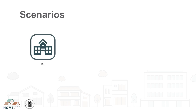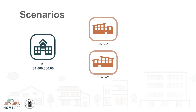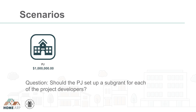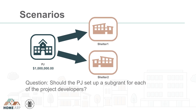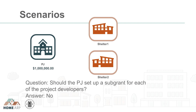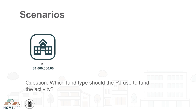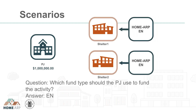In the next scenario, the PJ has budgeted $1 million for the development of non-congregate shelters. It issued an RFP and selected two projects to be developed. Should the PJ set up a subgrant for each of the project developers? No — the PJ would not set up a subgrant for the project developers of the non-congregate shelters. The PJ does not have any executed subrecipient agreements, so it should not be setting up any subgrants. The developers are not administering part of the PJ's HomeARP program and therefore are not considered subrecipients, and do not require the use of an SU subgrant in IDIS. The PJ would use the EN fund type to fund this activity.